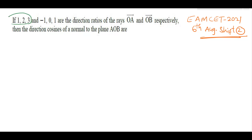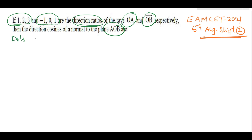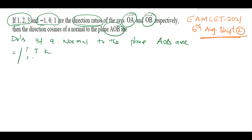Final problem: if (1, 2, 3) and (−1, 0, 1) are direction ratios of rays OA and OB respectively, find the direction cosines of the normal to plane AOB. This is MSet 2021, 6th August, Shift 2. The direction ratios of the normal equal the cross product: | i  j  k | | 1  2  3 | |−1  0  1 |.